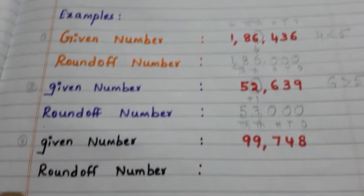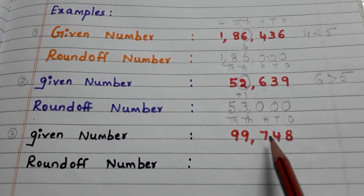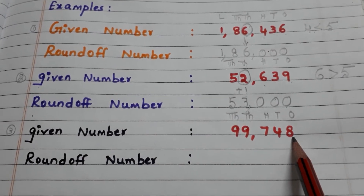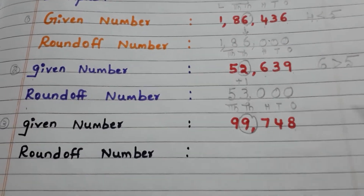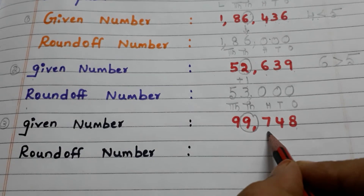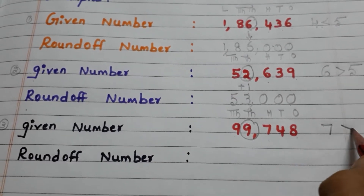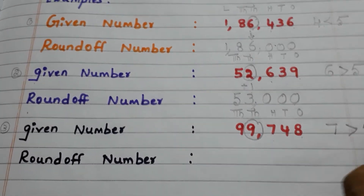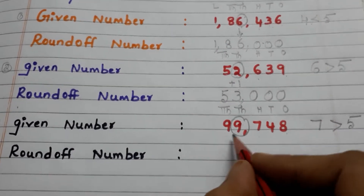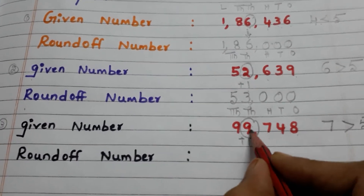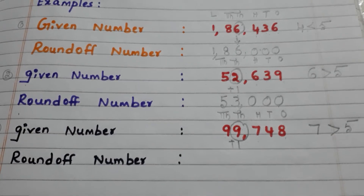Let us go to the last example. Here we have the number 99,748. The thousands place digit is 9. Observe the hundreds place digit — here it is 7, and 7 is greater than 5, so we have to add 1 to the thousands place digit. But 9 plus 1 is 10 — we can't write 10 directly.